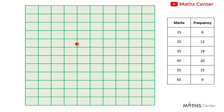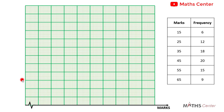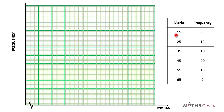We have the graph sheet here and this is the table containing the data. From the previous video we learned that when drawing a histogram for ungrouped data, the marks will be on the horizontal axis and the frequencies on the vertical axis. The marks start at 15 and end at 65, and the difference between them is 10.